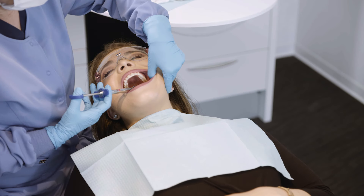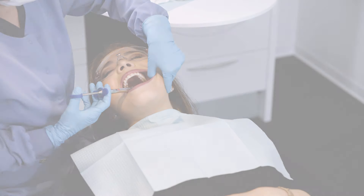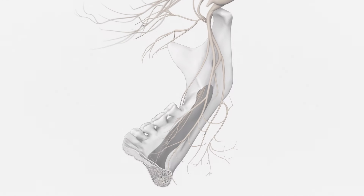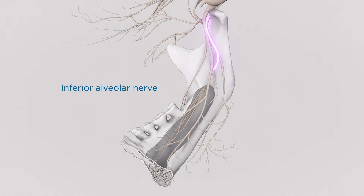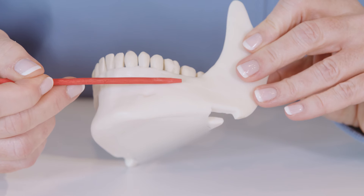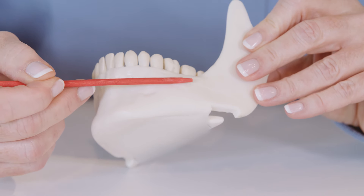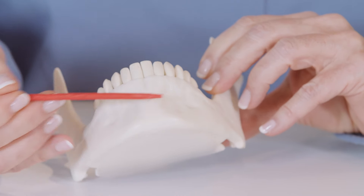Blockade of the inferior alveolar nerve is the most commonly desired goal of mandibular anesthesia, and also one of the most difficult blocks to achieve. Mandibular anesthesia depends on successfully blocking branches of the trigeminal nerve, especially the inferior alveolar nerve, which supplies mandibular teeth and surrounding soft tissue. The comparatively dense mandibular bone often precludes effective anesthesia from superperiosteal injections with available agents, except perhaps in the incisor region.